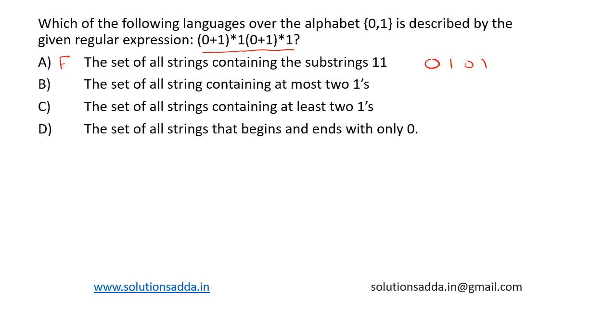Second one, option B: The set of all strings that contain at most two 1's. At most means it will contain only a maximum of two 1's. This can generate 111 01, which contains more than two 1's, so this option is also false.